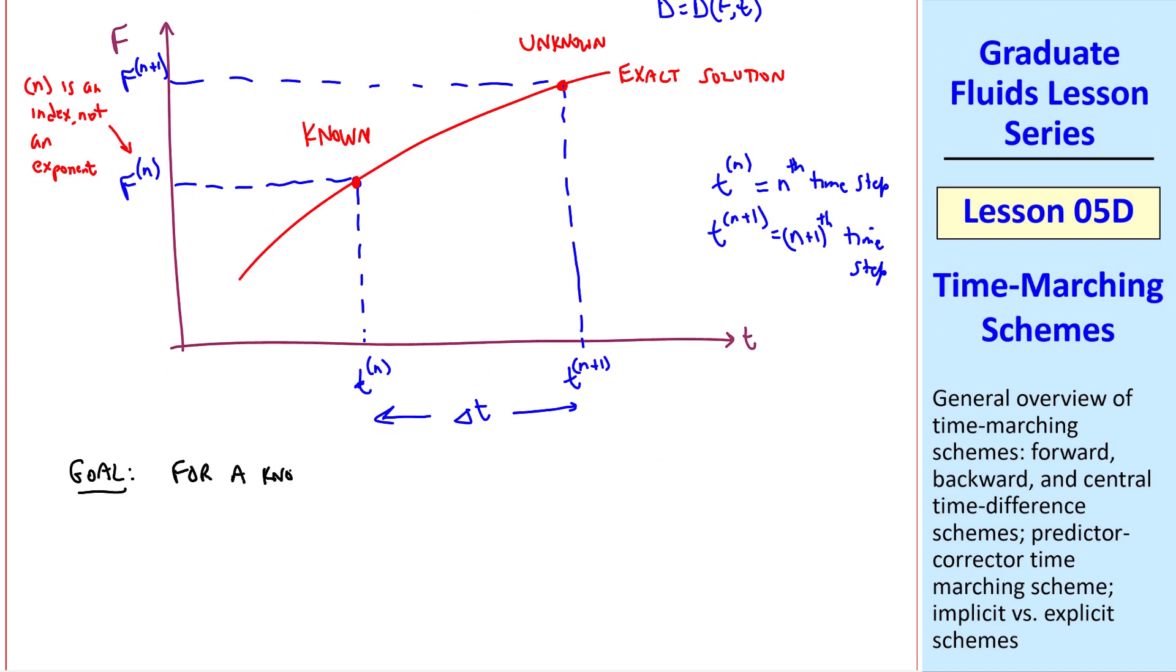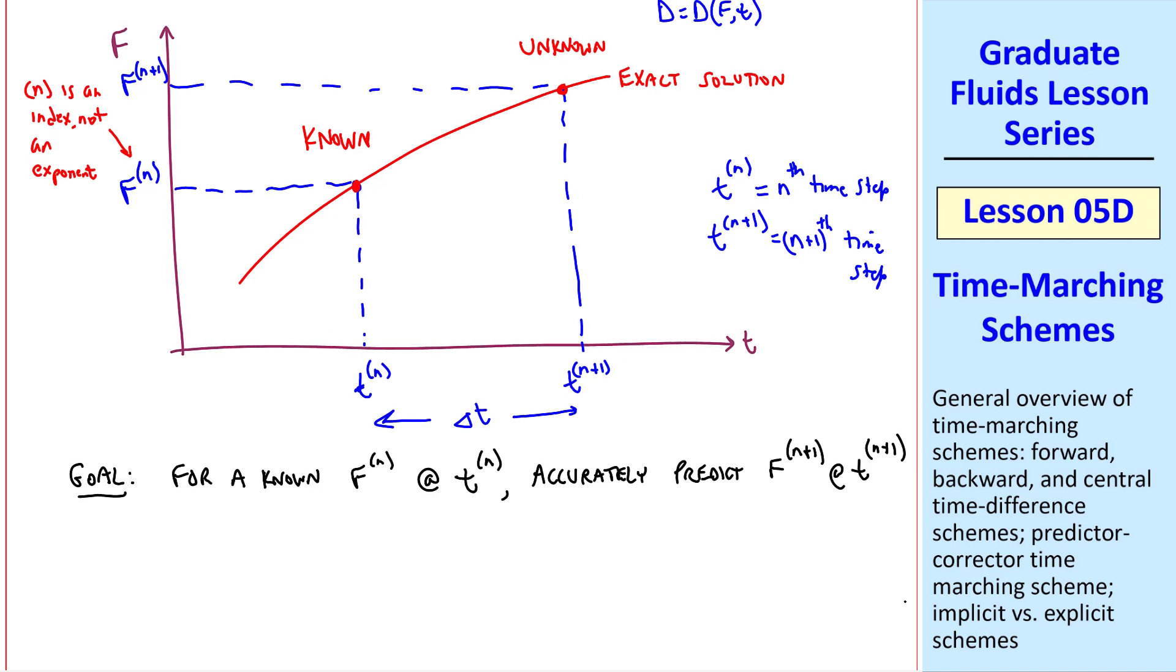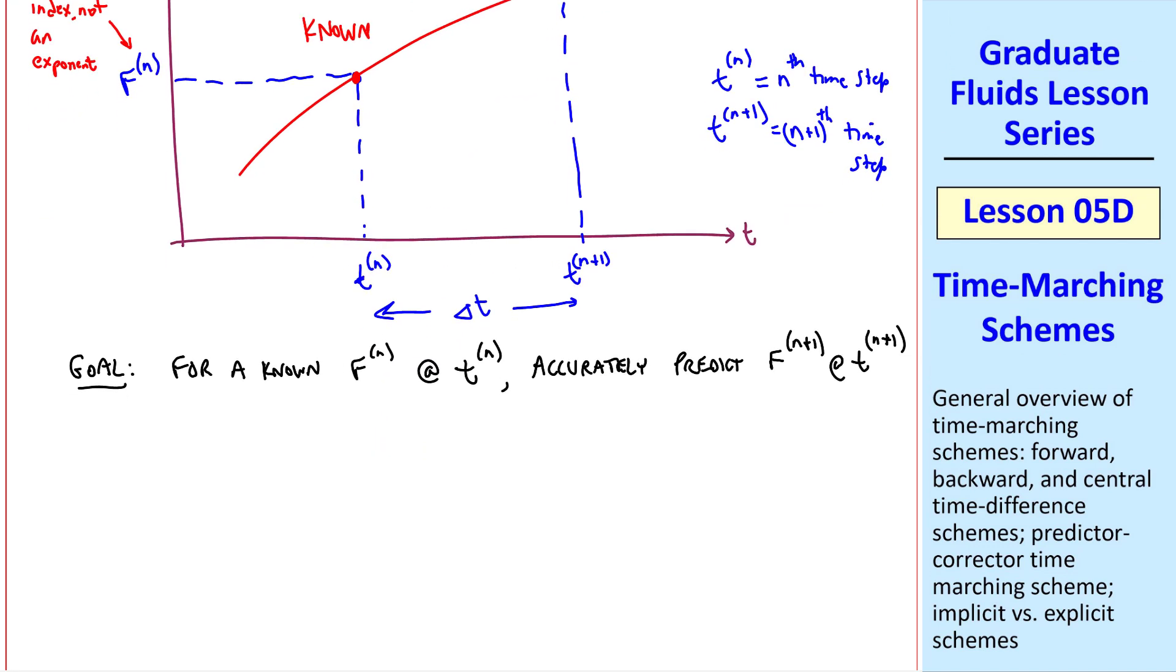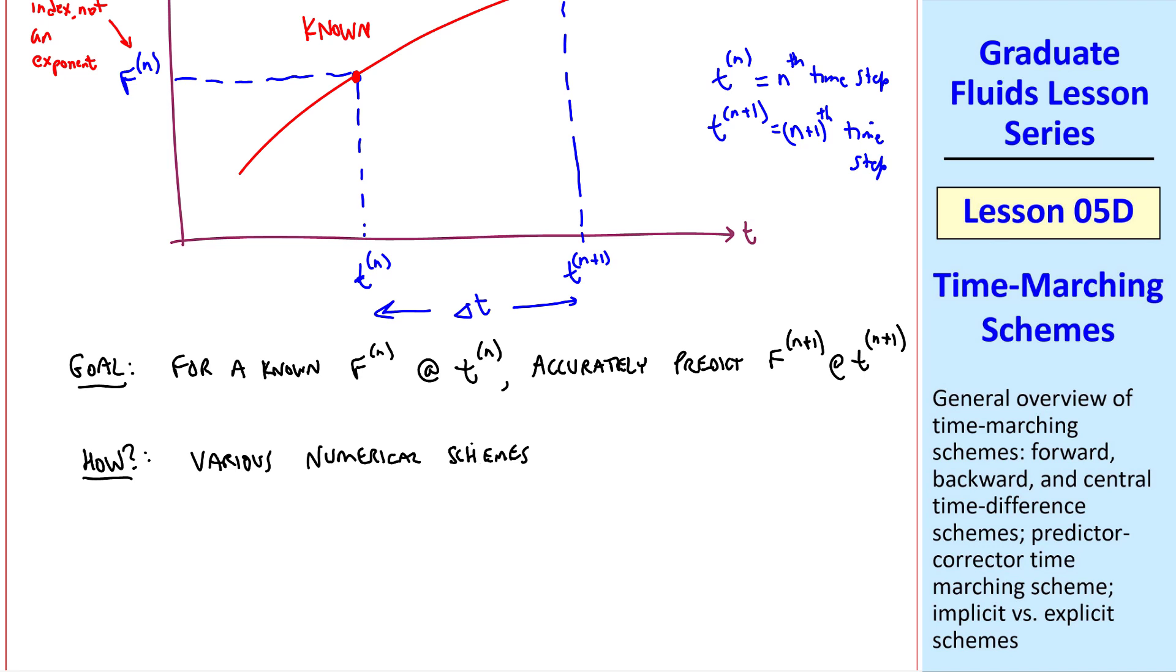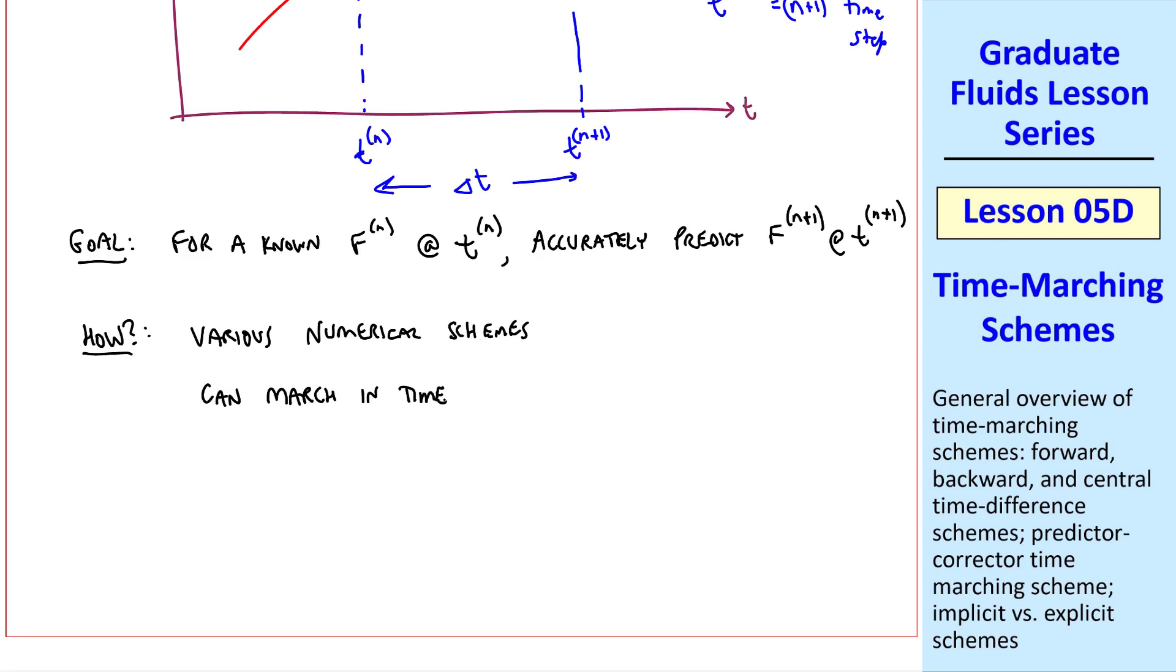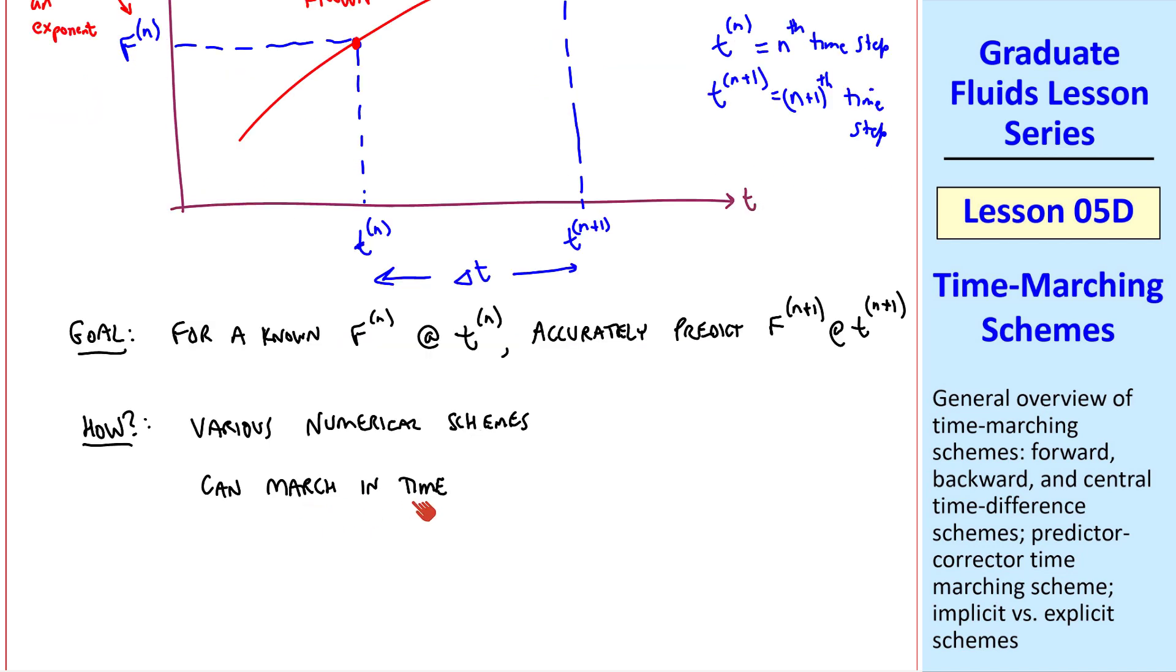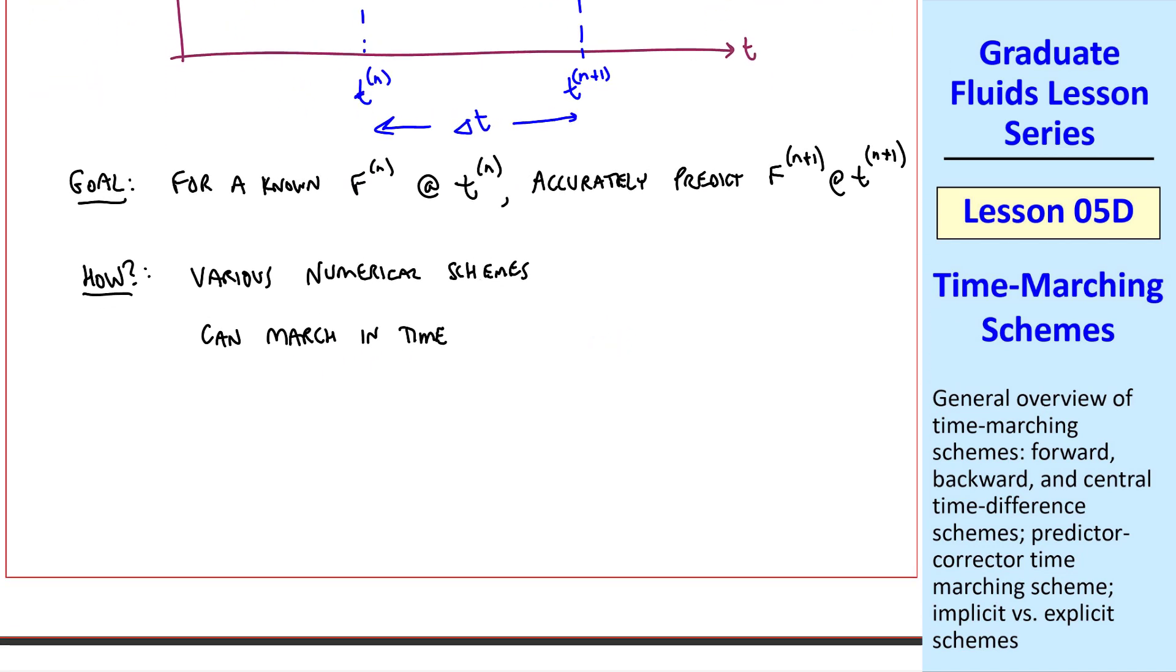The goal in this problem is that for a known fn at tn, we want to accurately predict fn plus 1 at tn plus 1. In all our examples, we'll assume that we know this derivative function. How do we achieve our goal? Well, there are various numerical schemes that we can devise to do this. And then once we do that, we can march in time. In other words, once we predict this f, we can march to the next time step, tn plus 2, and then continue marching in time.